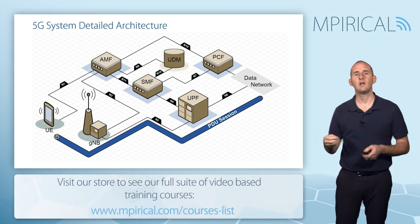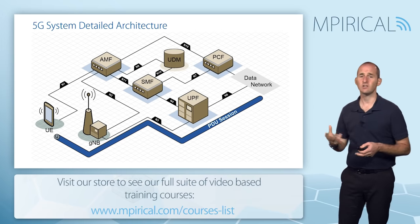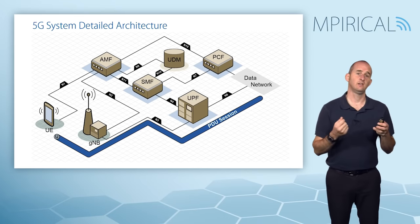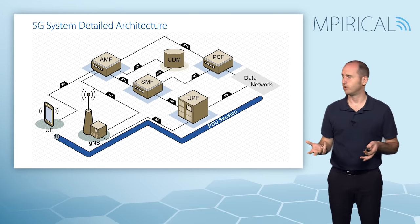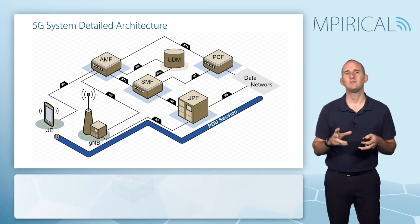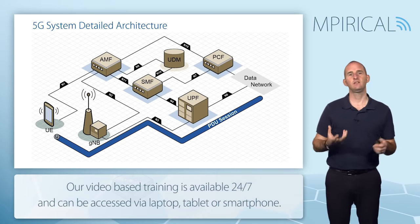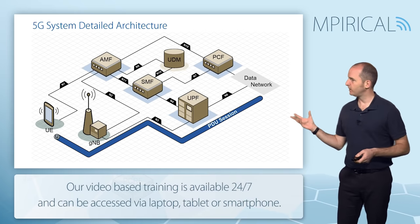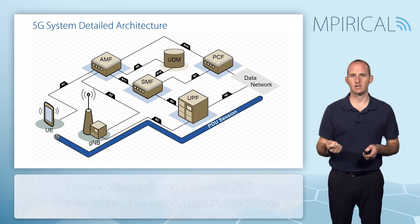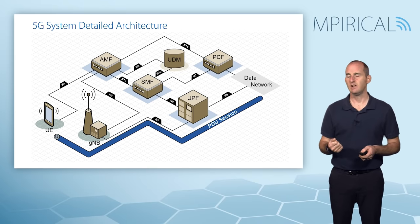This is a more detailed representation of the core network. This is the reference point representation where we see our various core network elements connected up with different network reference points. The first thing we're going to pick out from this diagram is the user plane connectivity, and that user plane connectivity in 5G is called a PDU session — a Protocol Data Unit session.